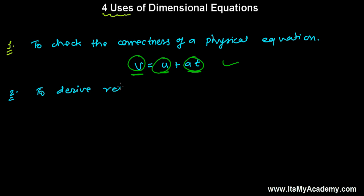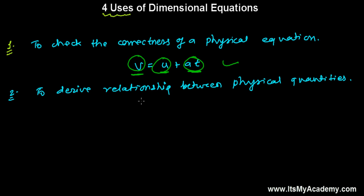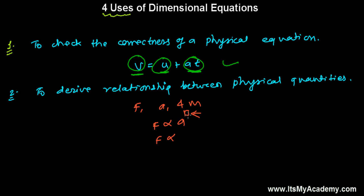To derive a relationship between physical quantities — let's take an example. Say we have force, acceleration, and mass, and we need to find the relationship between them. How do we know what the relationship is? Whether force is directly proportional to acceleration with some power, or inversely proportional? There must be some relationship. If the power is positive, then it's directly proportional; if it's negative, then it's inversely proportional. Similarly, mass — what power does mass have? We need to get this relationship.